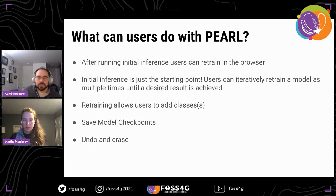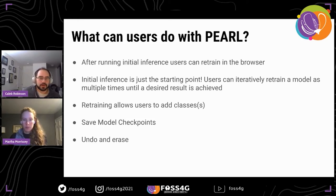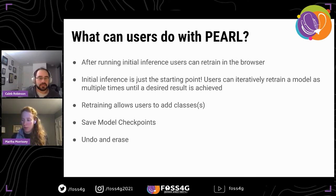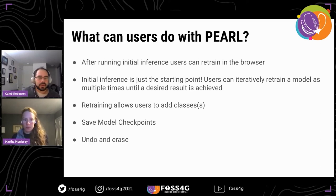Another key feature that comes about from retraining is the ability for users to add new classes. If you add points for a sand class, for example, the model can on the fly learn to disambiguate sand from bare soil. The Pearl interface allows users to save trained model checkpoints so after you do a bunch of work you can save it and come back later. There are also nice features like the ability to undo points you've added or erase work.